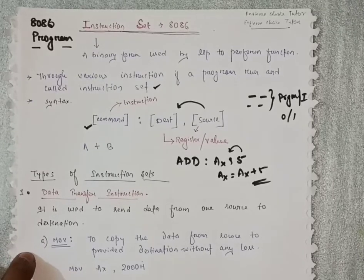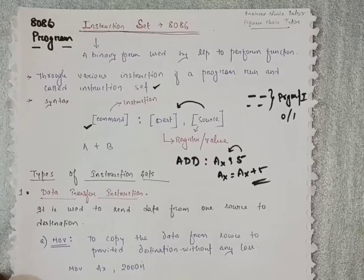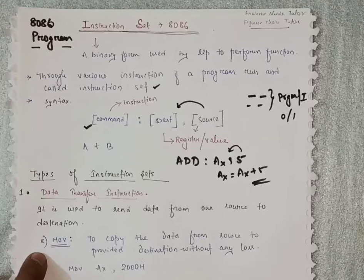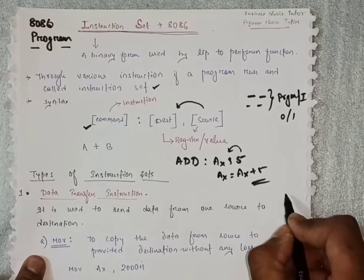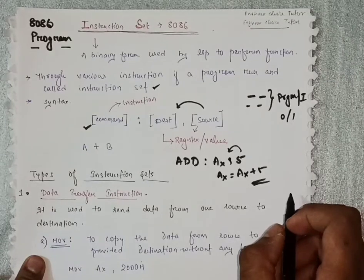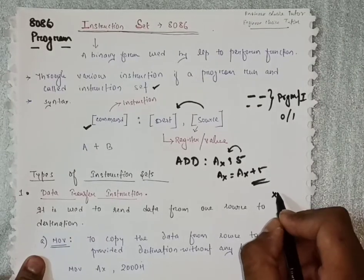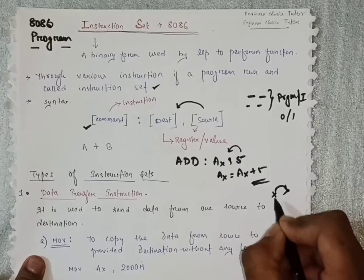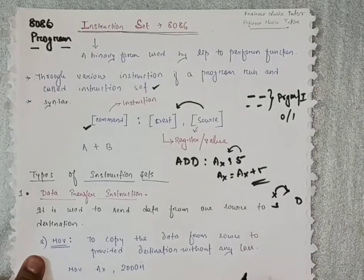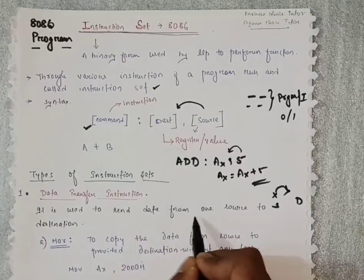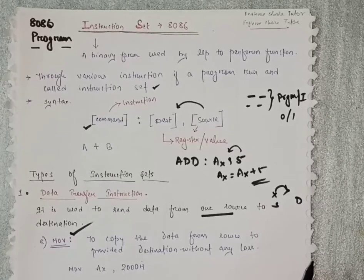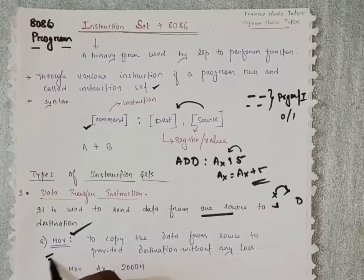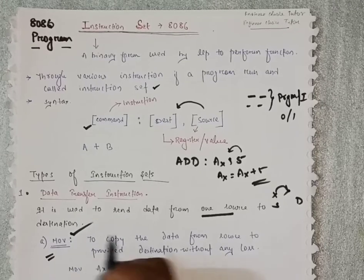Now we will see the different types of instruction sets used in the 8086 microprocessor. The first one is data transfer instruction. As the name suggests, it will transfer data from one source location to another destination. The first command is MOV — the move command will copy the data from one source to another destination.